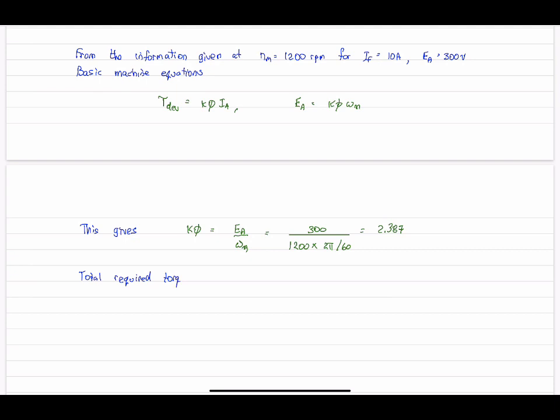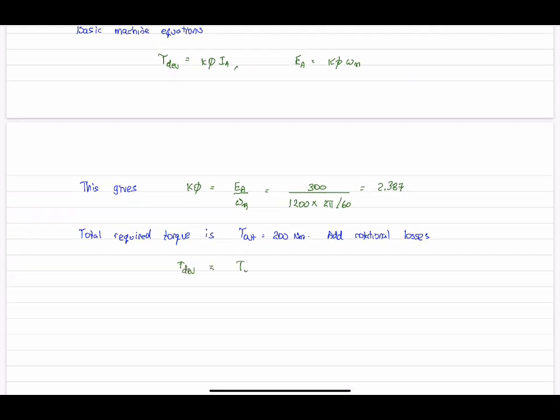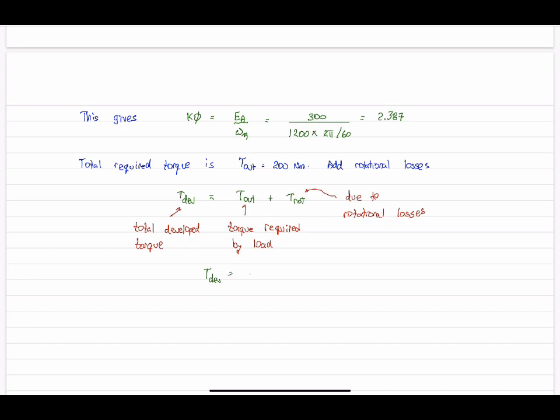Now the total required torque is 200 newton meters. So this is the torque that is demanded by the load, so we have to make sure we deliver that. What we need to do is calculate the total developed torque. So the sum of the required output torque by the load, and we have to factor in these rotational losses. So total developed torque needs to be 212 newton meters. So that guarantees that 200 newton meters are delivered to the load.